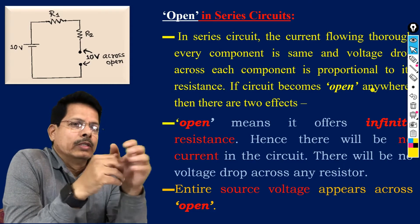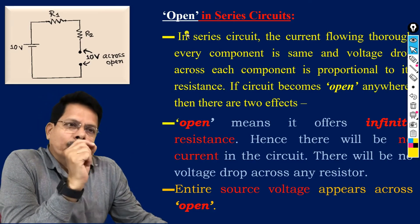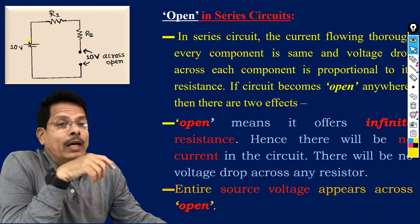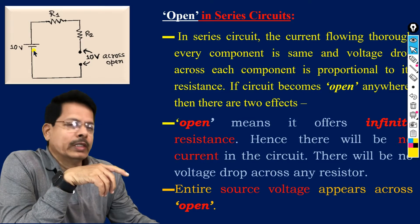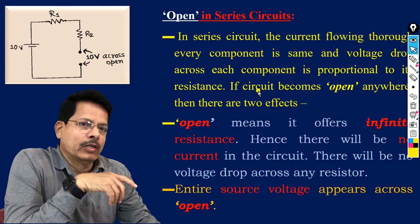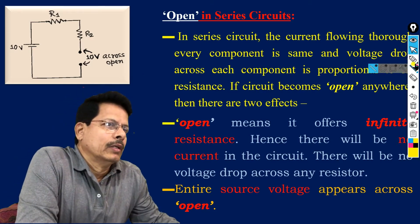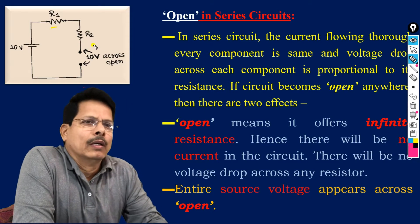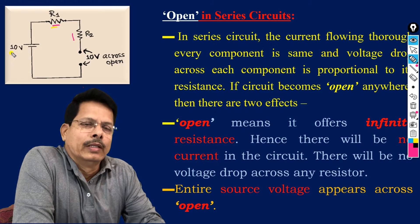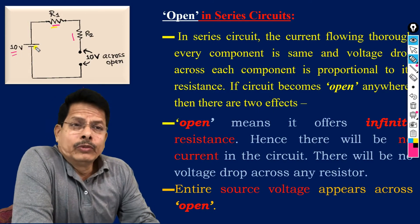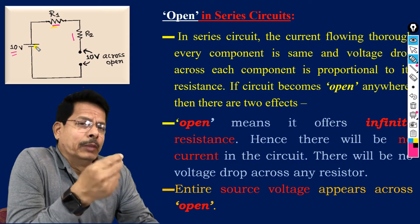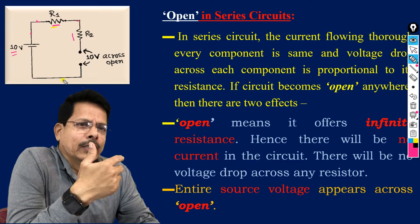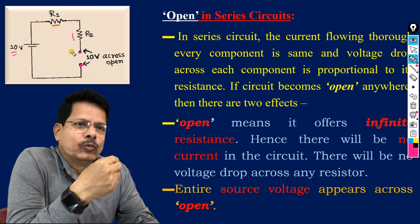Here I have shown one simple series circuit, and we want to discuss open in a series circuit. I have taken R1, R2, R3 in series, and a 10 volt source is applied across that series combination. Now we want to discuss when an open occurs somewhere because of a loose contact. An open can occur anywhere.